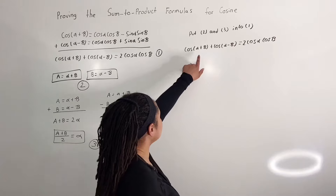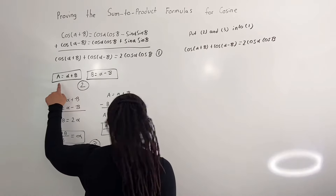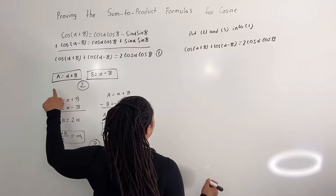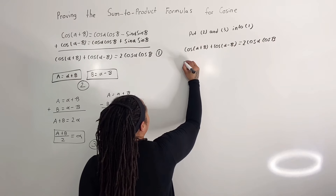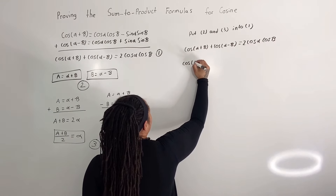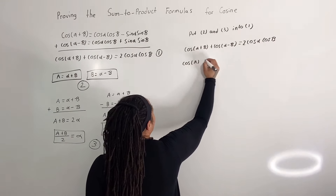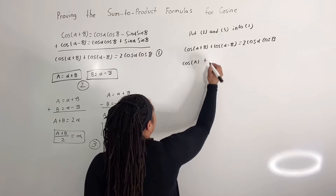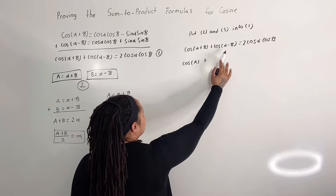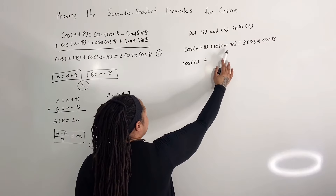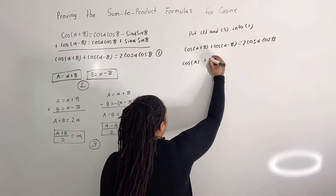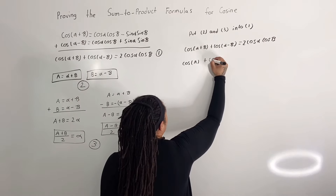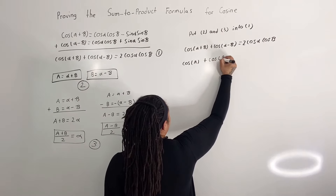Now we said that alpha plus beta is equal to a, so I know that this is equal to cosine of a. Plus, we said that alpha minus beta is equal to b, so this will be cosine of b.